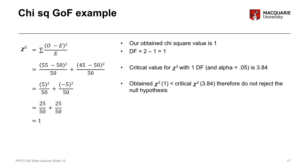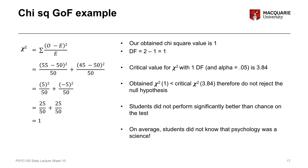Our obtained chi-square of 1 is smaller than the critical chi-square of 3.84, so we do not reject the null hypothesis. Students did not perform significantly better than chance — on average, students did not know that psychology was a science before they started studying it. In summary, the chi-square goodness of fit test is a single-variable test examining whether the proportions of people in each category differ from some expected or known proportion — just like the one-sample t-test, but for a categorical rather than a numeric variable.